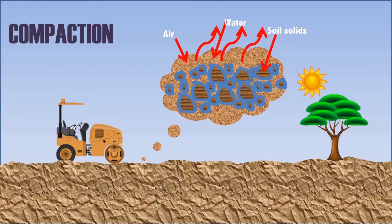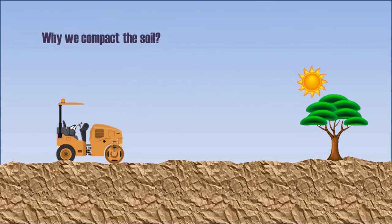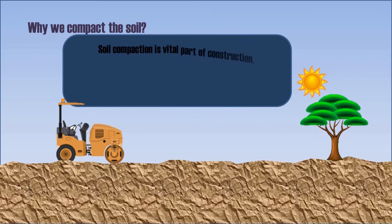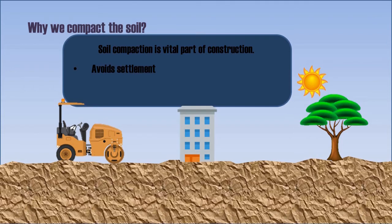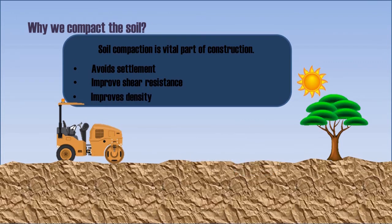When you compress the matrix, the water and air is expelled, and that creates a compacted matrix. Have you ever wondered why we compact the soil? Soil compaction is a vital part of construction. It avoids settlement, as we're going to support our structures on the underneath soil. It improves shear resistance — we want the soil to be safe against deterioration and any failure due to shear. It enhances the density of soil by reducing voids and air content, and we want the soil to be durable and stable against all odds.